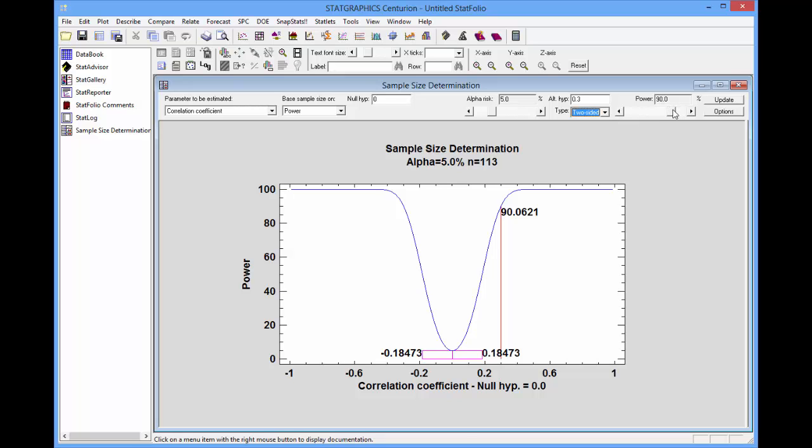This slider here controls the power of the test. My requirement was that I have a 90% chance of rejecting the null hypothesis when the correlation was 0.3, so I'll leave the power at 90%. The graph is now displaying the required sample size. It says that I need 113 pairs of X, Y values to achieve what I wish to achieve.